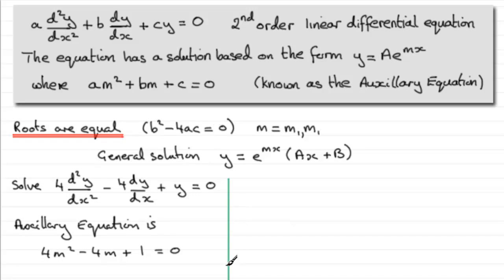telling us we're going to have equal roots. If we factorize this, it turns out to be 2m minus 1 multiplied by 2m minus 1, which equals 0, leading to two equal roots. The root is m equals one half. That means the general solution